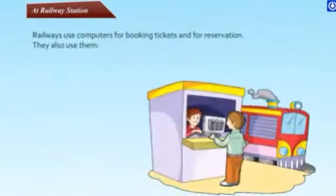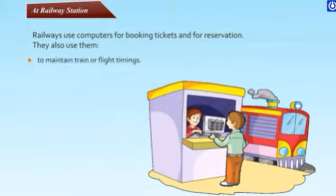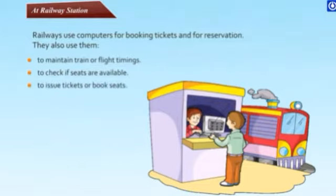At the railway station, railways use computers for booking tickets and for reservation. They also use them to maintain train or flight timings, to check if seats are available, and to issue tickets for booked seats.